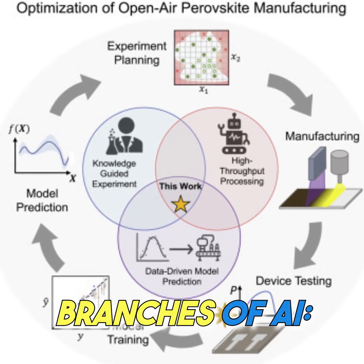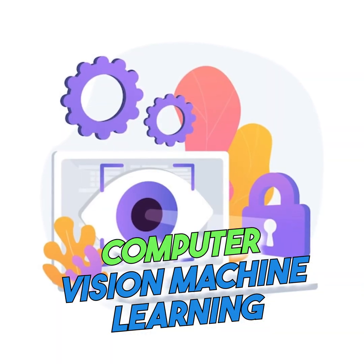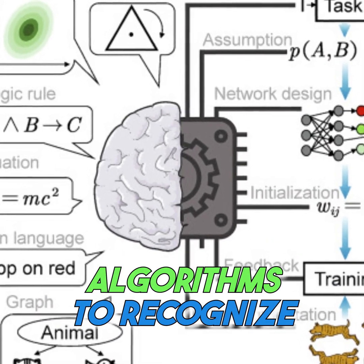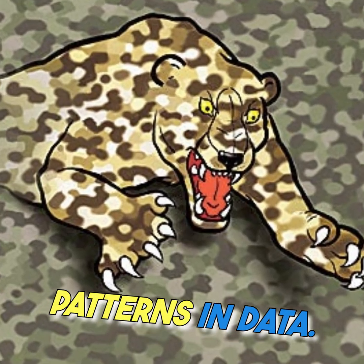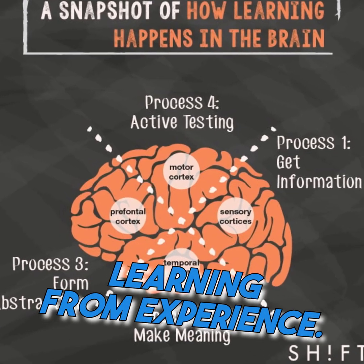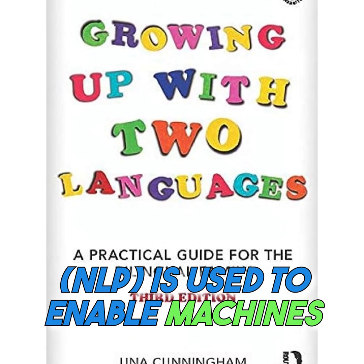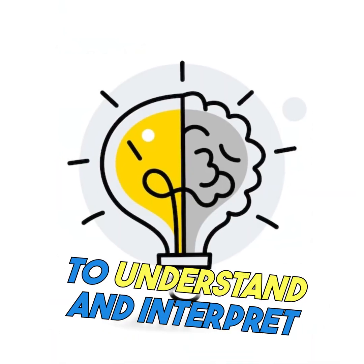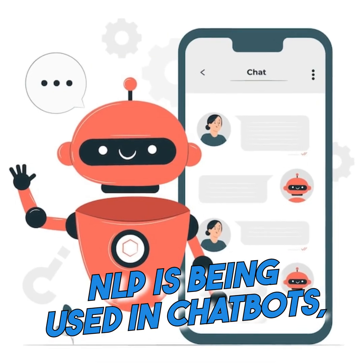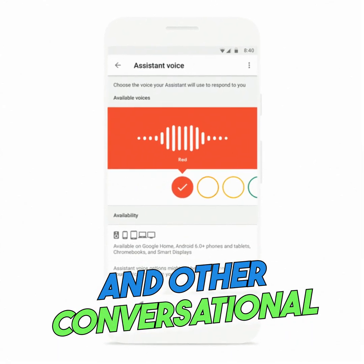Branches of AI: Machine Learning, Natural Language Processing, and Computer Vision. Machine Learning is an important branch of AI that involves training algorithms to recognize patterns in data. It enables machines to improve their performance over time by learning from experience. Natural Language Processing, NLP, is used to enable machines to understand and interpret human language. NLP is being used in chatbots, voice assistants, and other conversational interfaces.